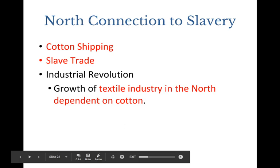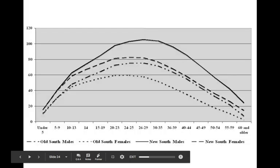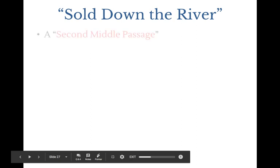This is all happening in the same time period as the tariff and the nullification crisis. As for selling down the river, slaves were brought to certain slave trade areas and auctioned off — you'd see children, women, and males of all different ages. Teenagers and young males for clearing land, and young females for reproducing more slaves became the most sought-after, so plantations could expand. The second middle passage refers to being sold into the deeper South — the black belt areas.